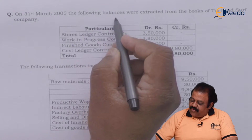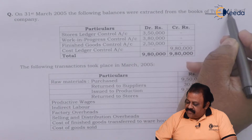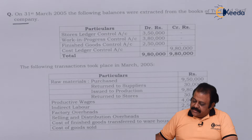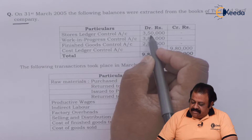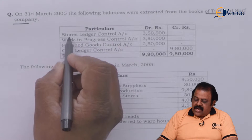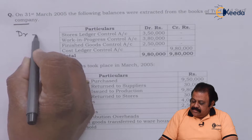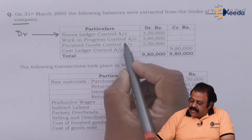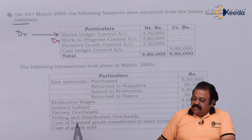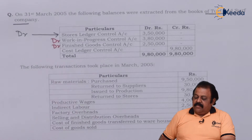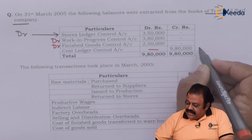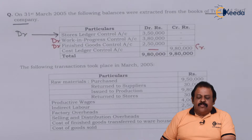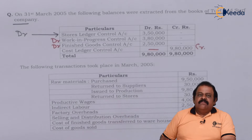On 31st March 2005, the following balances were extracted from the books of Turf & Surf Company: stores ledger control account debit 3,50,000; work in progress control account debit; finished goods control account debit; cost ledger control account credit 9,80,000. The following transactions took place in the month of March 2005.